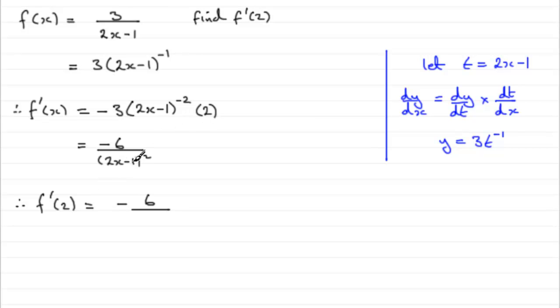2 times 2 is 4, minus 1 is 3, 3 squared is 9. And that cancels down to minus 2 thirds if you divide top and bottom by 3. So there you go, f dash of 2 equals minus 2 thirds.